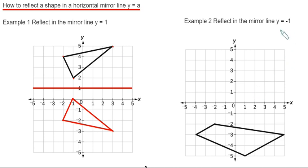This time we will reflect the quadrilateral in the mirror line, y equals minus 1. So y equals minus 1 is a horizontal line going through the y-axis at minus 1. Let's draw this line in here.